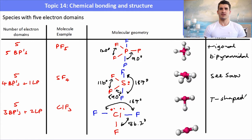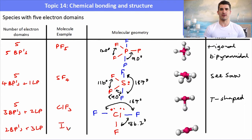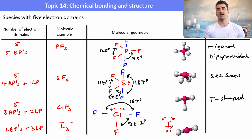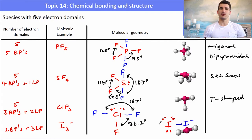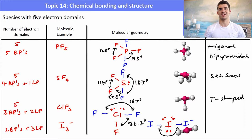The last species with 5 electron domains has 2 bonding pairs and 3 lone pairs. An example is the triiodide ion, I3−. The lone pairs are all in the same plane, and the other 2 iodines are above and below. The electrons get as far away from each other as possible — 180 degrees — giving a linear structure.